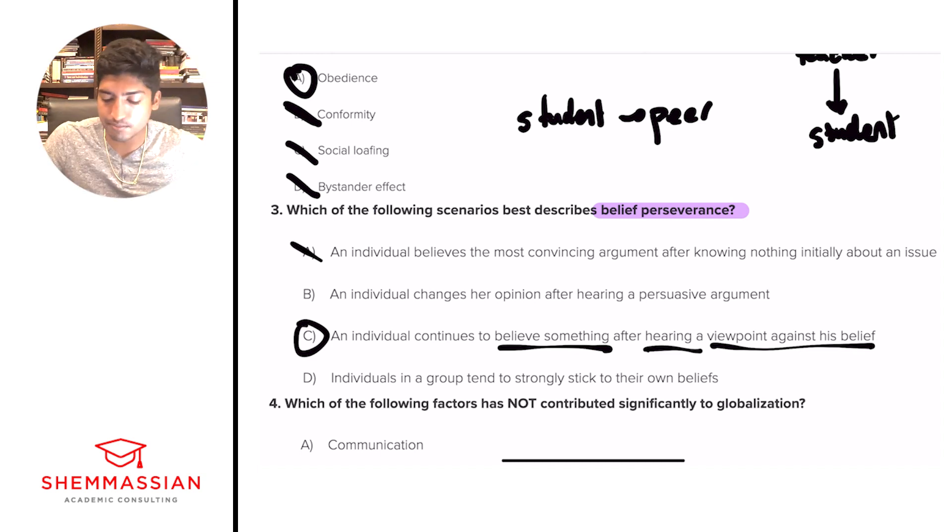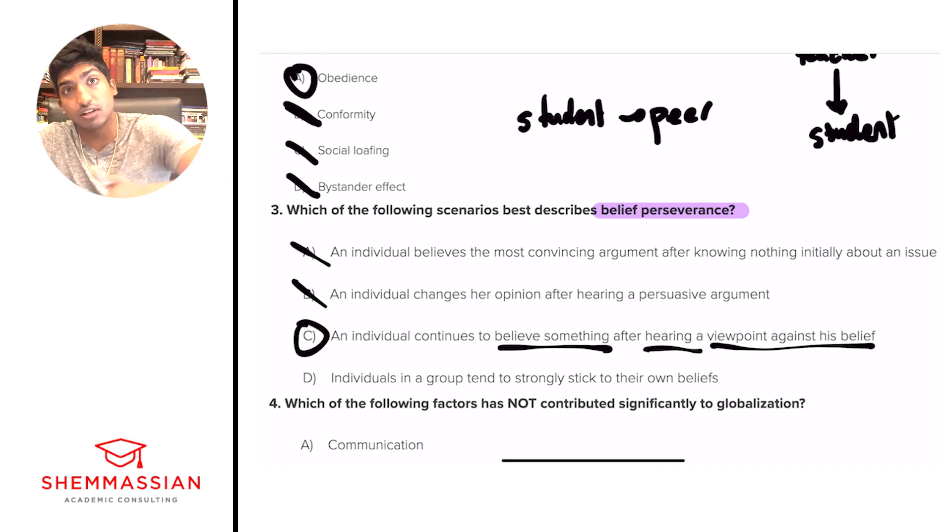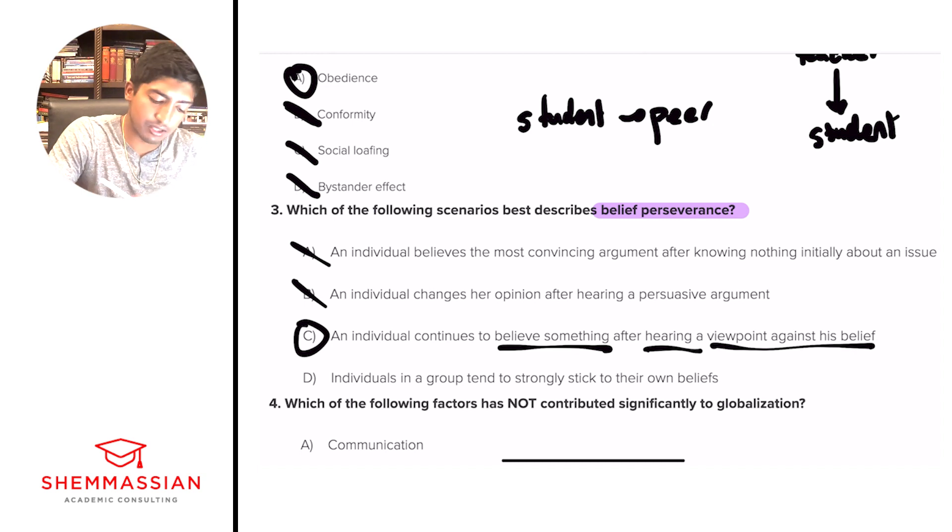There's only one answer choice that really hammers this idea in, and that's C. C is saying an individual continues to believe something after hearing a viewpoint against his belief. We have the idea that he believes something and we also have the idea that the viewpoint is against his belief that he hears. So with that, we have C. A doesn't make sense because you don't have that belief initially, so you're not going to persevere anything. B, an individual changes their opinion after hearing a persuasive argument—perseverance is not changing an argument. D, individuals in a group tend to strongly stick to their own beliefs—this is a broad scale idea. Sure, individuals in a group might maintain, stick to their own beliefs, but that doesn't really affect anything about your beliefs as an individual maintaining in spite of evidence. That's not what the definition of the term is, so we can eliminate D as well.